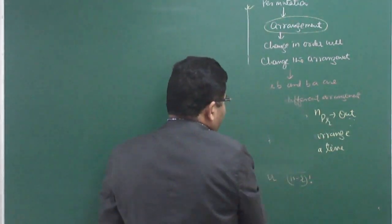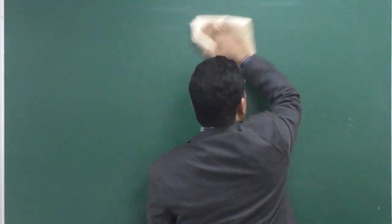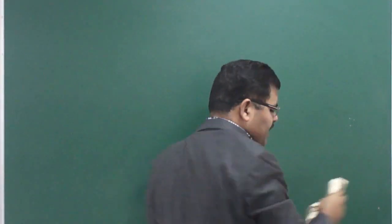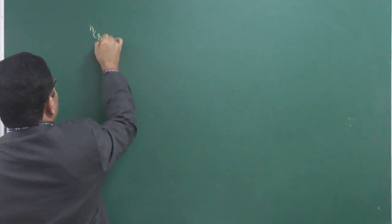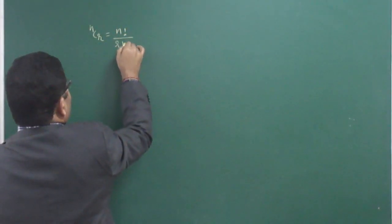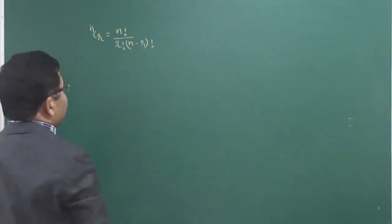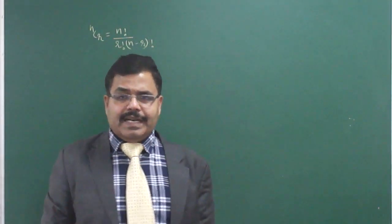In permutation we hardly used the formula of NPR, but in combination we will widely use the formula of NCR to satisfy and answer questions. NCR is N factorial upon R factorial times N minus R factorial, and the meaning is: out of N things, select R things at a time.